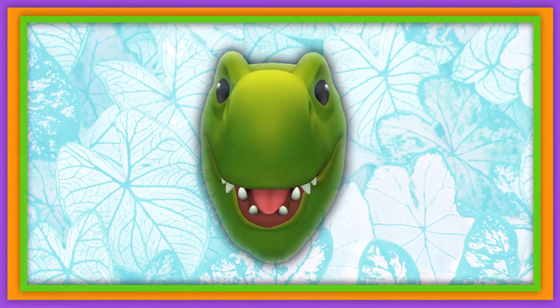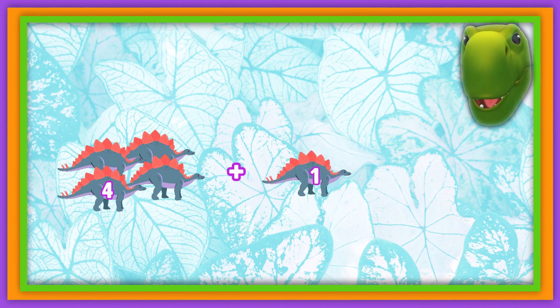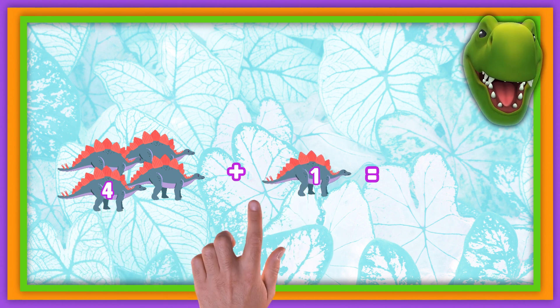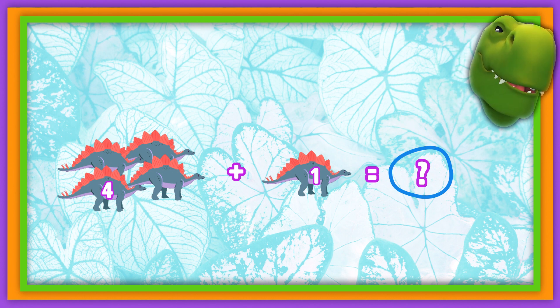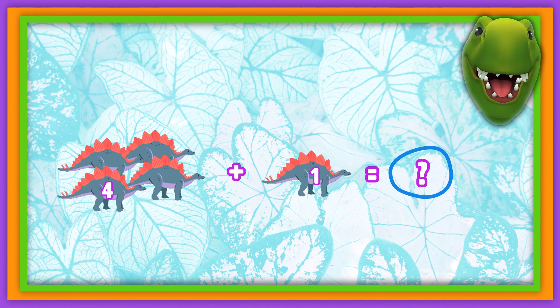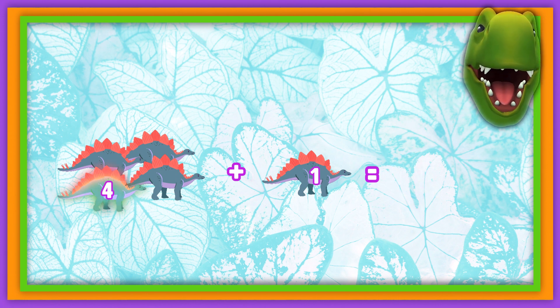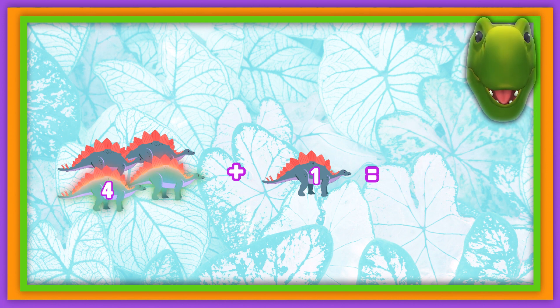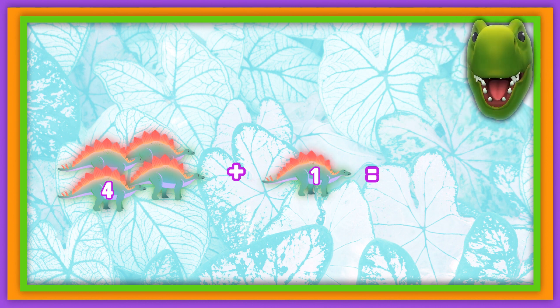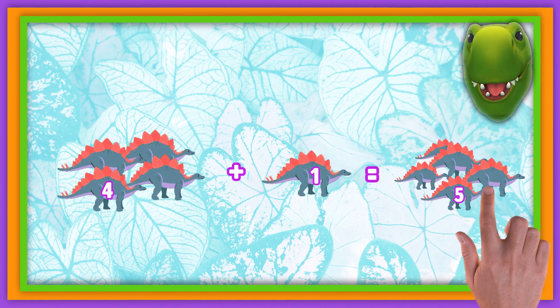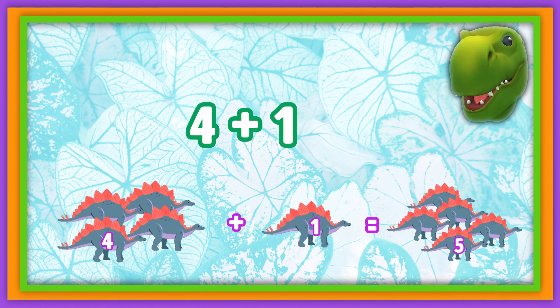This is our last math equation. We have four plus one. What is four plus one? Let's count. One, two, three, four, five. Yeah, five dinos. Four plus one equals five.